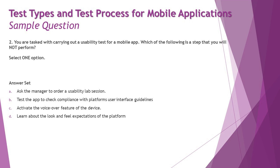Option A — ask the manager to order a usability lab session — is crucial because lab sessions are necessary to conduct a usability test and take feedback. Option B — test the app to check compliance with platform or user interface guidelines — is completely part of usability testing and aligns with its objective. Option C — activate the voiceover feature of the device — I think that's not relevant to usability, because this is not a necessary step to be conducted as part of usability testing.